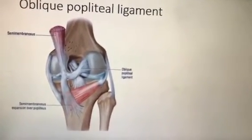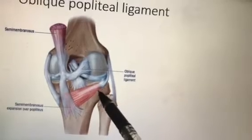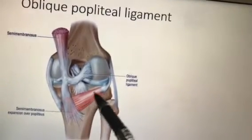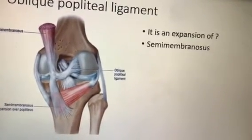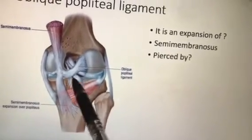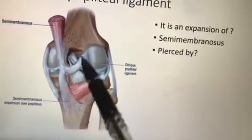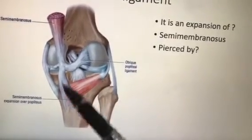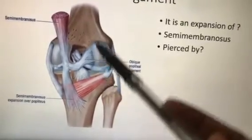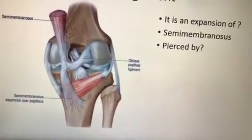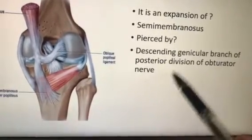The oblique popliteal ligament can be seen on the posterior aspect. It is the expanded part of the semimembranosus. It is pierced by the middle genicular vessels. The nerve piercing it is the descending genicular branch of the posterior division of the obturator nerve — this MCQ is commonly asked: which division of the obturator nerve? The answer is the posterior division.